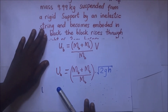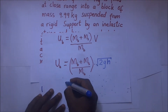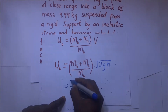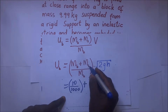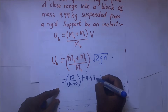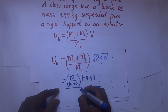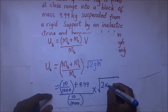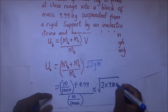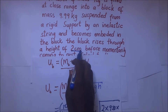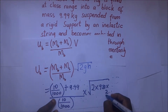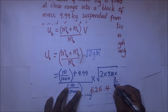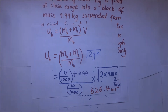The initial speed of the bullet is given by: mass of the bullet (10 grams, converted to kilograms as 10/1000) plus the mass of the solid block (9.99 kg), divided by the mass of the bullet (10/1000 kg), multiplied by the square root of two times acceleration due to gravity (9.81) times the height (two centimeters, converted to meters as 2/100). The final answer we get is approximately 626.4 meters per second — that is the initial velocity of the bullet.